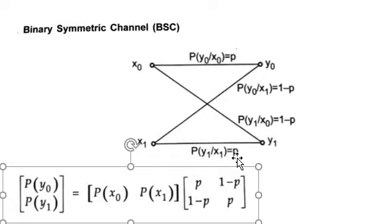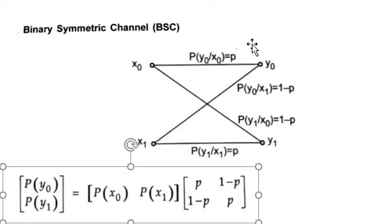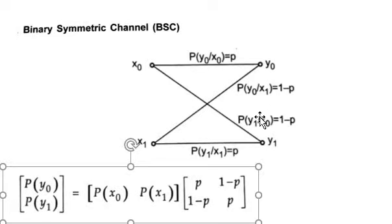Therefore, you can call it symmetry or the diagonal probability. The probability of P(Y1|X0) and probability of P(Y0|X1) — both these probabilities should be the same. Here it is 1 minus P. That is why we call it a symmetrical channel. The binary communication channel is said to be symmetric if P(Y0|X0) equals P(Y1|X1), which equals P.